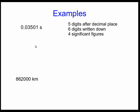So let's look at some examples. Here's the first example, look at that number. It has five digits after the decimal place and there are six digits written down, but I'll tell you it has only four significant figures. The point is, these two zeros here are to tell you that the first significant figure, this three, is in the hundredths of a second place. They're there to establish the order of magnitude. Everything after that is a significant figure.